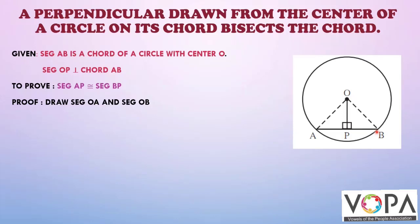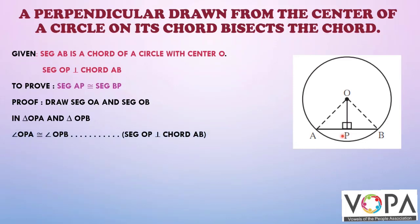Proof: Draw segment OA and segment OB. In triangle OAP and triangle OBP, angle OPA is congruent to angle OPB, since segment OP is perpendicular to AB.